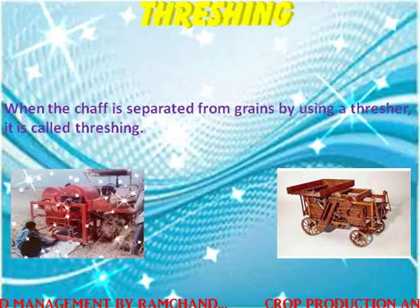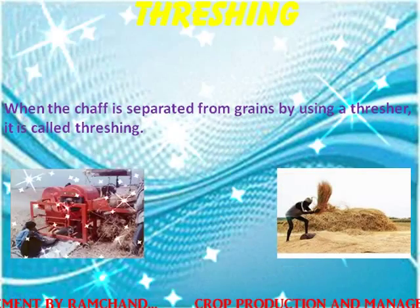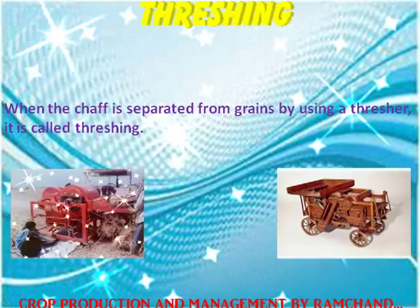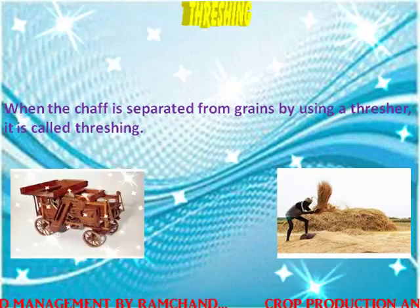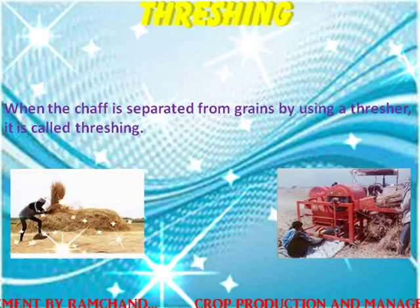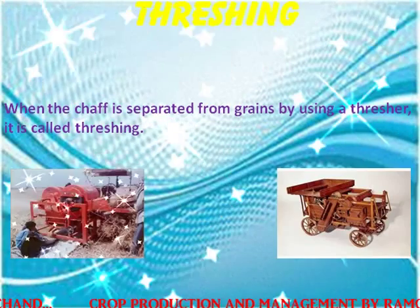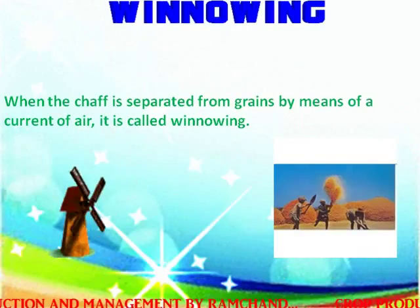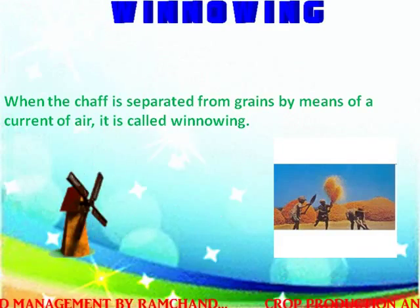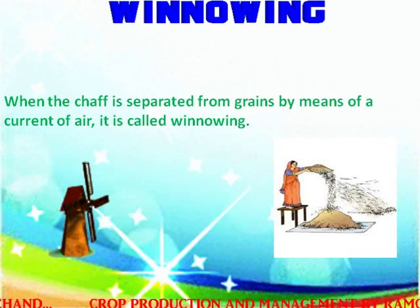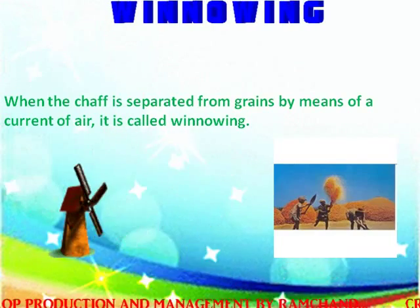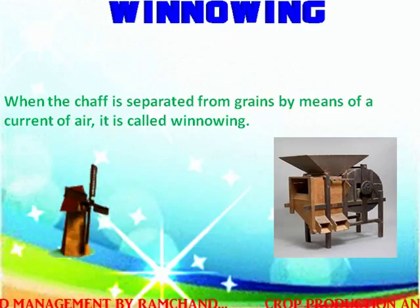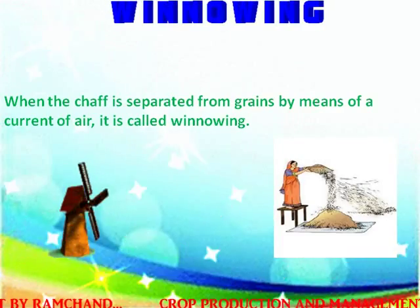Threshing. When the chaff is separated from grains by using a thresher, it is called threshing. Winnowing. When the chaff is separated from grains by means of a current of air, it is called winnowing.